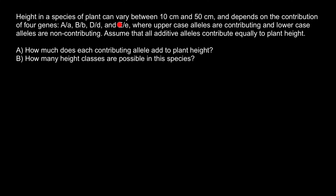So how many classes are we going to have? The first variant would be a combination where all eight alleles are recessive and none are dominant — eight recessive alleles and zero dominant alleles. Another class would have seven recessive alleles and one dominant allele. So in one column the number of recessive alleles decreases, and in the other the number of dominant alleles increases.